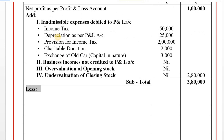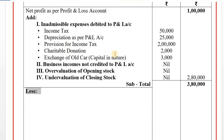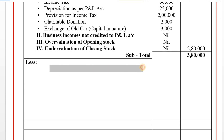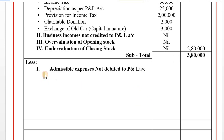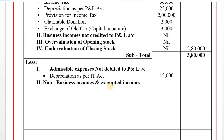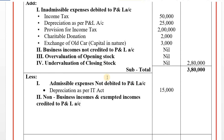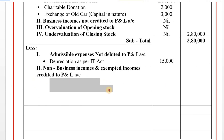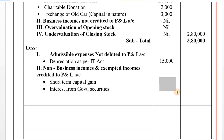If there is a positive adjustment, inadmissible expenses are added in debit; admissible expenses are deducted. For depreciation under section 32: depreciation already added back from the Companies Act figure is now replaced — depreciation admissible under Income Tax Act is less: 15,000. Next, Roman numeral II — non-business incomes and exempted incomes credited to profit and loss account are deducted, such as interest income and short-term capital gain, to arrive at business income.